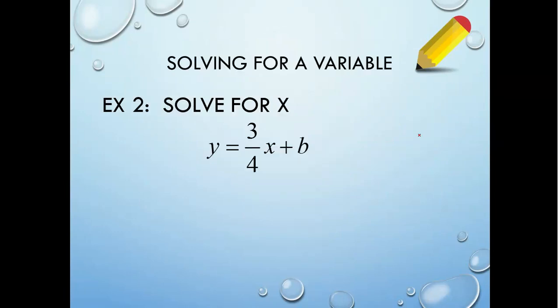Let's look at another example. I have y equals 3/4 x plus b. And I want to solve for x. So I need x all alone. What we got to do, we got to get rid of the other stuff. So this 3/4 and this plus b. So plus b, think of that as a number. So if I had 3/4 x plus 2 and I needed to solve for x, well, we would have subtracted the 2, right? So let's subtract b from both sides.